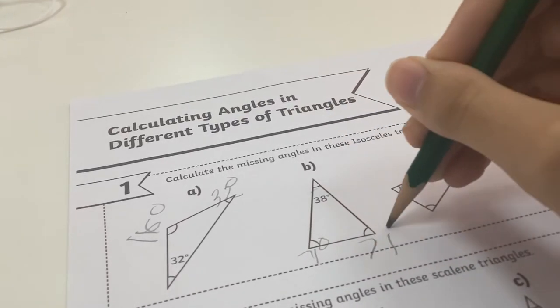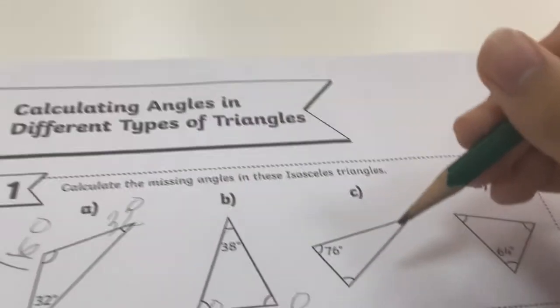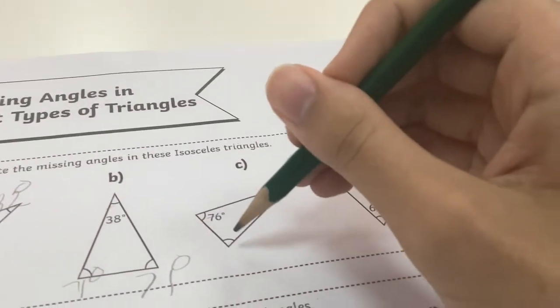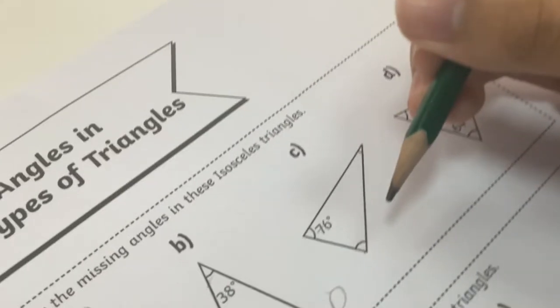I'm going to put 70 on both sides. And now we're going to put the angles of this one. Now 76 degrees on these two sides. What do I need to do?